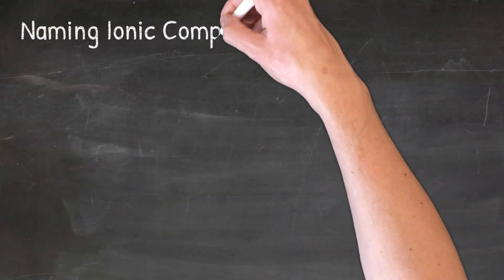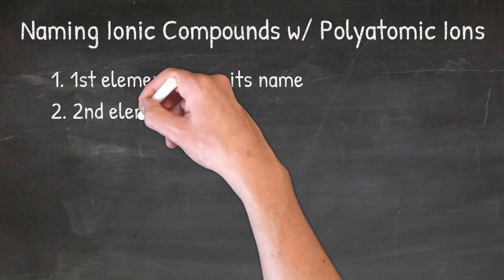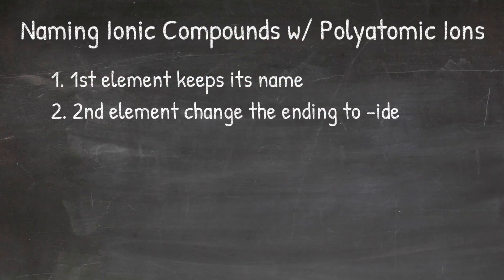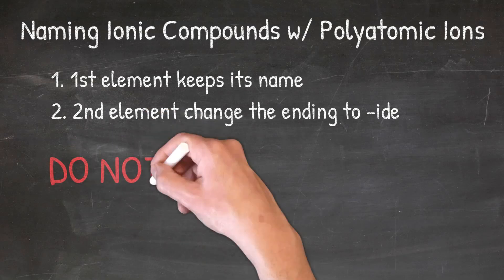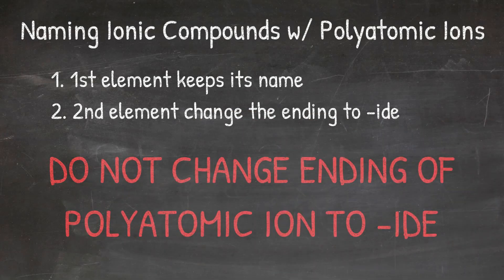So when we look at the ionic naming rules, we should remember that the two rules are: one, first element keeps its name, and two, second element change the ending to -ide. So the only difference from these rules when we have a polyatomic ion present is that we would not change the ending to -ide. We would leave the name of the polyatomic ion just as it is.